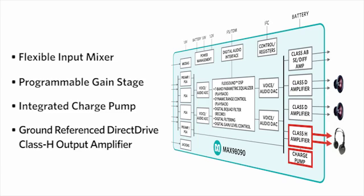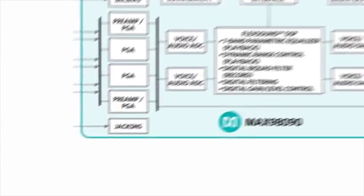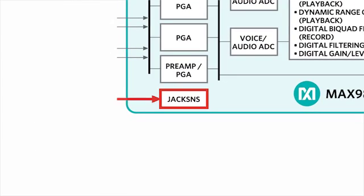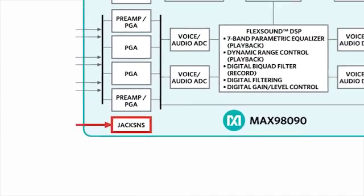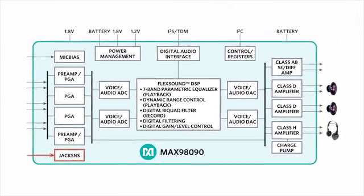The headphone output amplifier has a full-scale range of one VRMS and is capable of driving both 16-ohm and 32-ohm ground-referenced headphone loads. The jack detection circuit detects the insertion and removal of a jack, as well as identifies and distinguishes between a headphone or a headset.